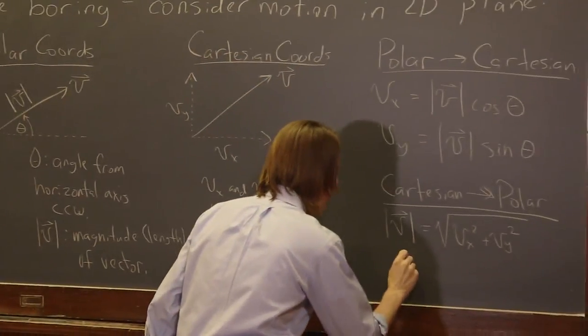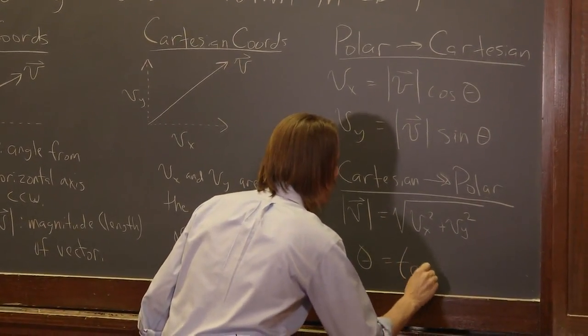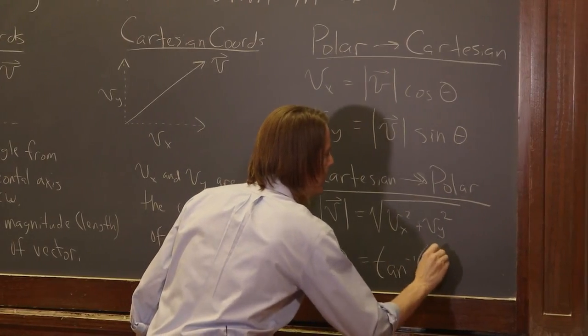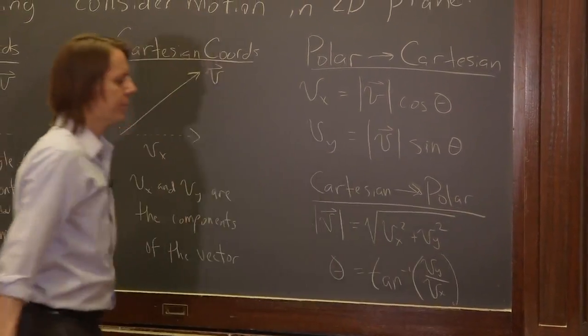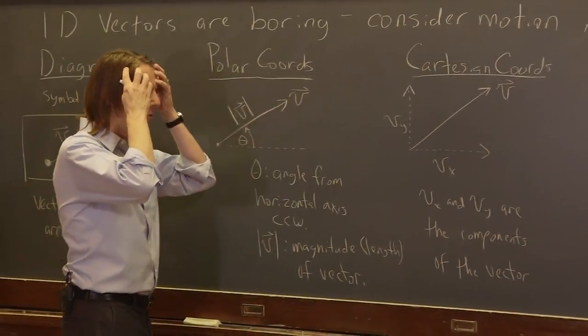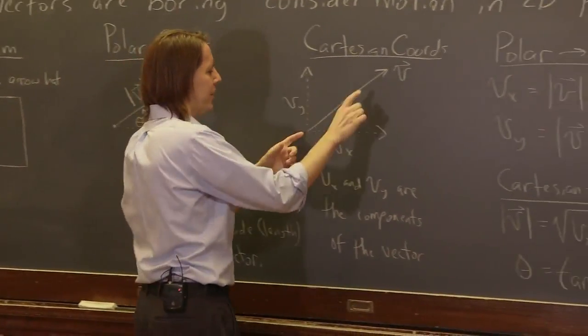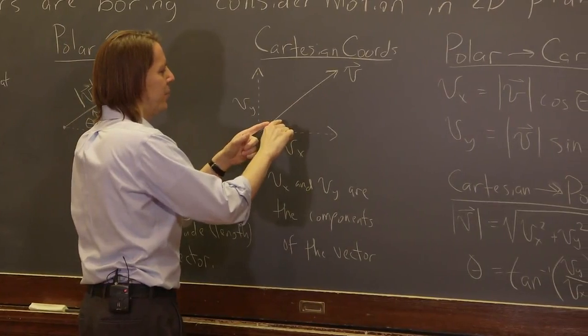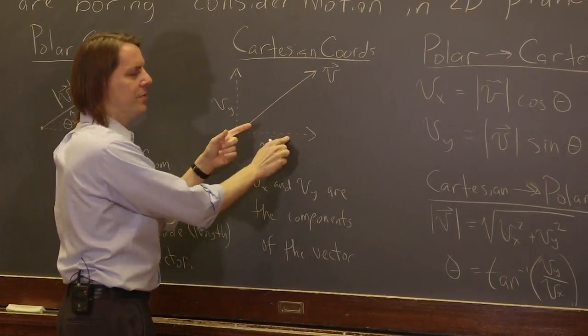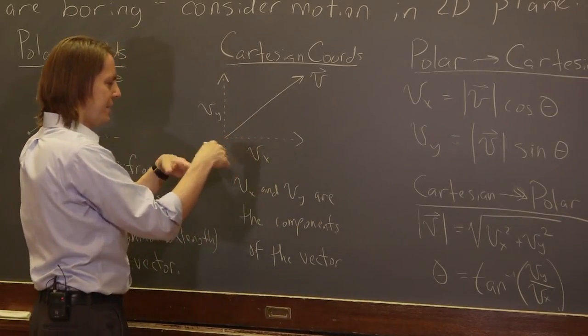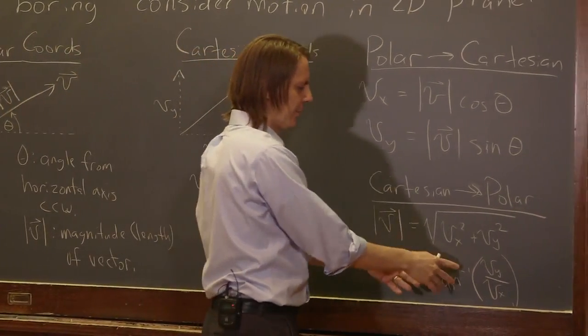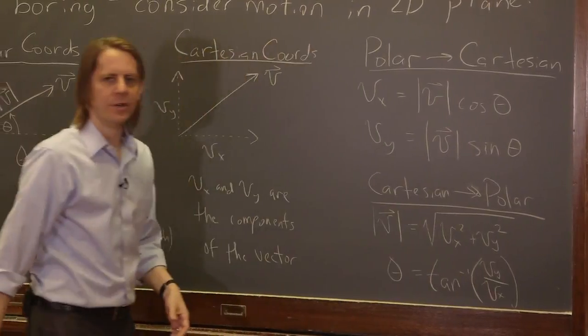Finally, the last thing you might want to get is theta. If you have theta, that's the inverse tangent of Vy over Vx. You say, oh what, the inverse tangent? It's just trig. If you're looking for this angle, what's tangent? It's opposite over adjacent, right? SOHCAHTOA. If the tangent of this angle is opposite over adjacent, take the inverse tangent of both sides, and then you have the angle. It's the inverse tangent opposite over adjacent.